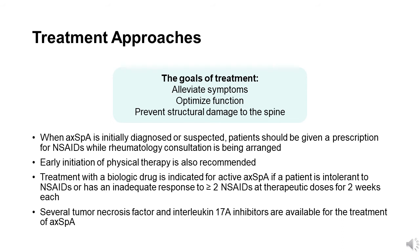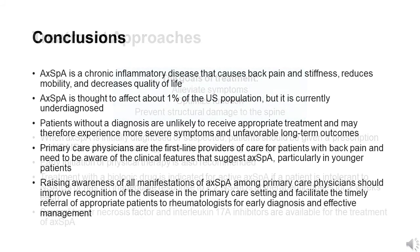Several tumor necrosis factor and interleukin-17A inhibitors are available for the treatment of axial spondyloarthritis. The selection of biologic therapies may be influenced by comorbidities, availability including insurance formularies, response to prior treatment if previously treated with a biologic drug, patient preference, and other factors. Neither traditional disease-modifying drugs such as methotrexate or sulfasalazine nor systemic glucocorticoids are recommended for axial manifestations because there is little evidence of their clinical benefit.